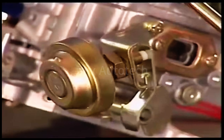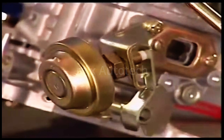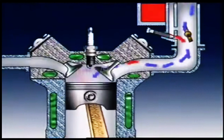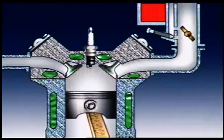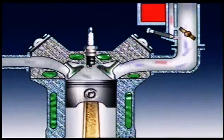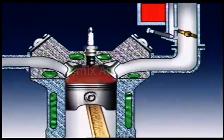The throttle positioner and dashpot slow down the rate of closure of the throttle plate. This allows more time for air to enter the manifold and for the fuel to vaporize before the throttle is completely closed. A more combustible mixture is thus formed, which leads to complete combustion and a reduction in hydrocarbon and carbon monoxide emissions.